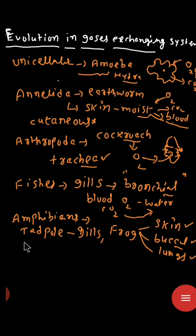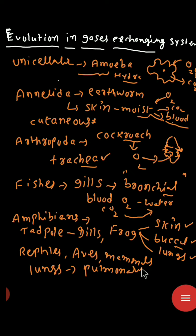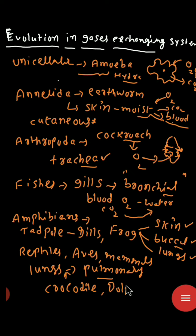Coming to the other caudates like reptiles, aves (birds), and also mammals — these animals show respiration with the help of the lungs, which is called pulmonary respiration. Birds, snakes, elephants, crocodiles, and also dolphins all respire with the help of the lungs. Crocodile is also a reptile and it also respires with the help of the lungs.